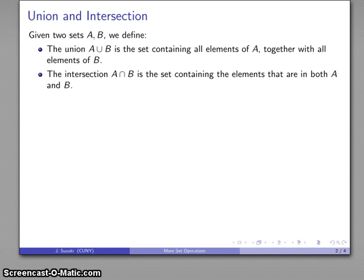Meanwhile, the intersection A intersect B is going to be the set that contains the elements that are in both A and also in B. And the symbol we use for that is a union symbol turned upside down.